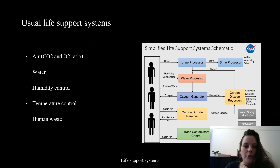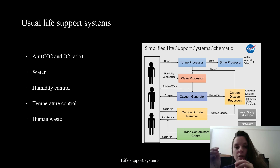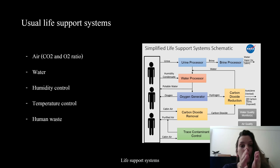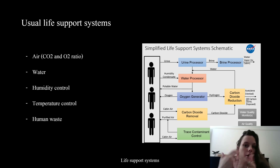The usual life support systems you might find - this is a very short illustration of NASA's life support system schematic. You can see the relations between air, water, humidity control, temperature control, and human waste, and how you can correlate and recycle some of them together. You can separate solid waste from liquid waste, recycle urine, and then perform hydrolysis to extract oxygen from it.